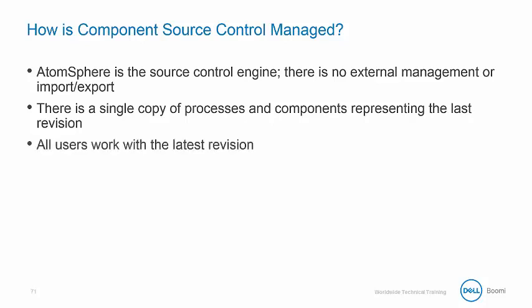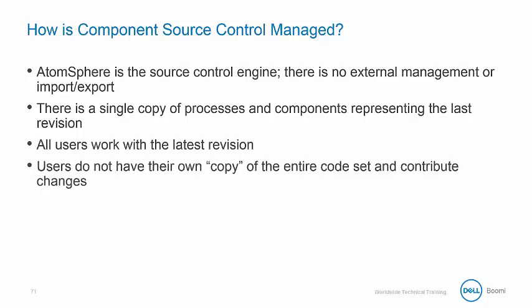All users work with the latest revision, and users do not have their own individual copy of the entire code, but instead contribute changes. Everyone is working on a shared process using the latest and greatest process version. There is no trunk-branch concept where you can spin off a copy of the code, make changes, and then merge it into the trunk. Instead, everything is contained in one copy.